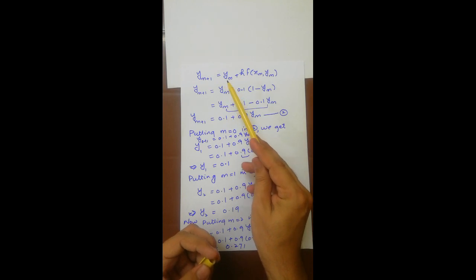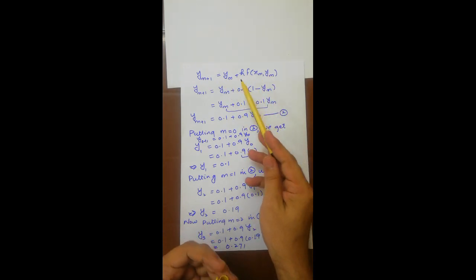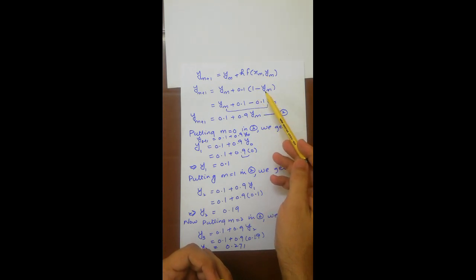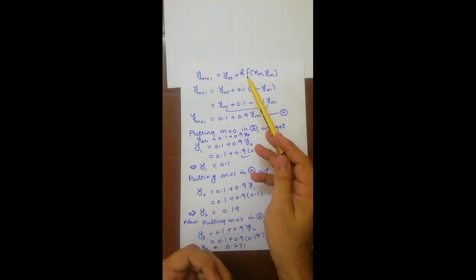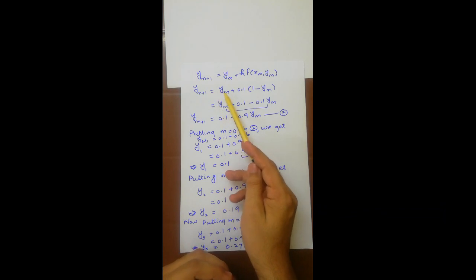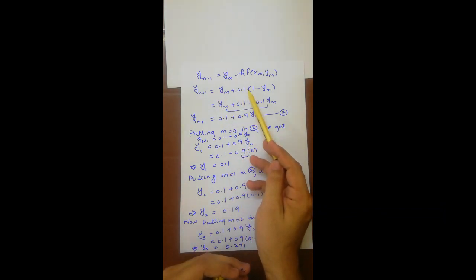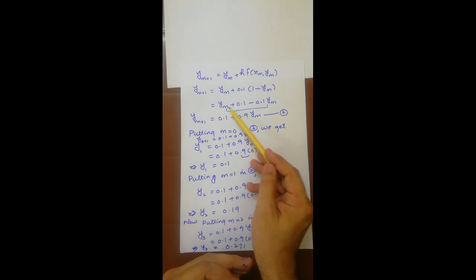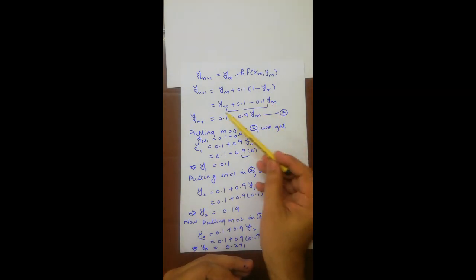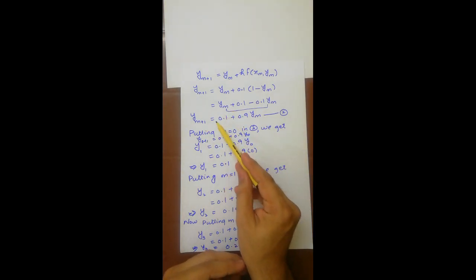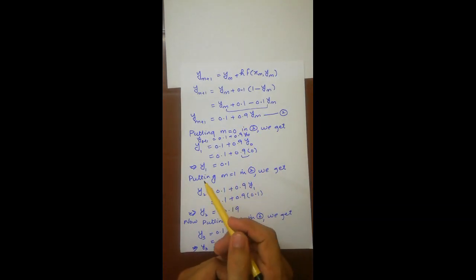Substituting into Euler's formula: y_{m+1} = y_m + h·f(x_m, y_m). With h = 0.1 and f(x_m, y_m) = 1 - y_m, we get y_{m+1} = y_m + 0.1(1 - y_m), which simplifies to y_m + 0.1 - 0.1·y_m. Combining like terms gives y_{m+1} = 0.1 + 0.9·y_m.